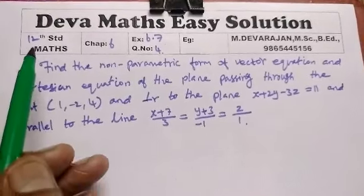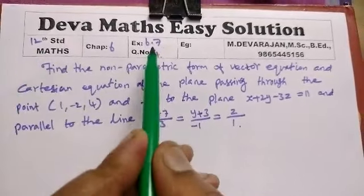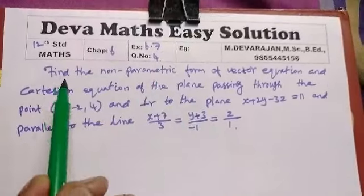Hi student, this is Devo. Now we are going to see Tolchan Mag Chapter 6, Exercise 6.7, Question Number 4.